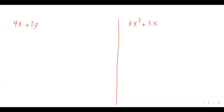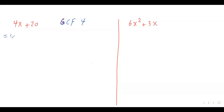What is the greatest common factor? Basically, it's a number or variable that is a factor of those terms — in other words, it divides evenly into those terms. The greatest common factor between 4 and 20 is 4. That's my greatest common factor. I write it down: 4. I open a bracket.